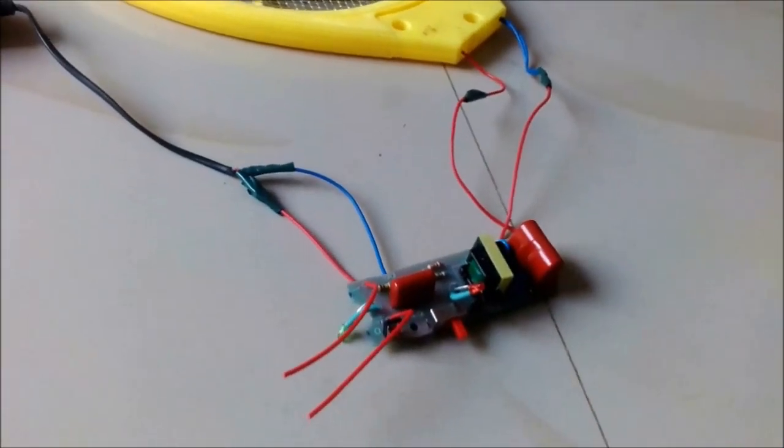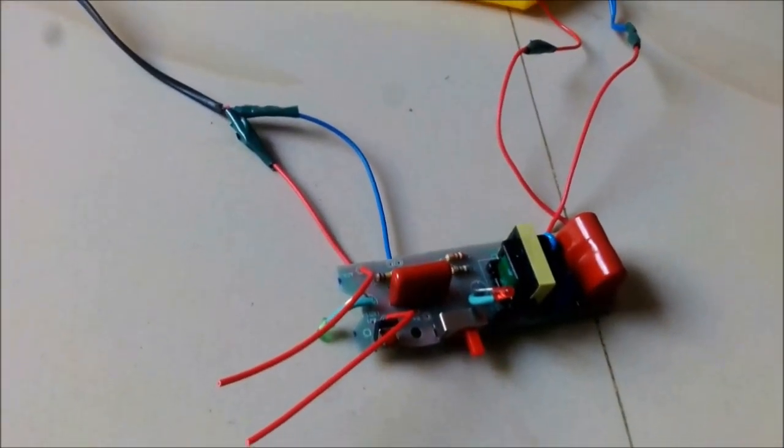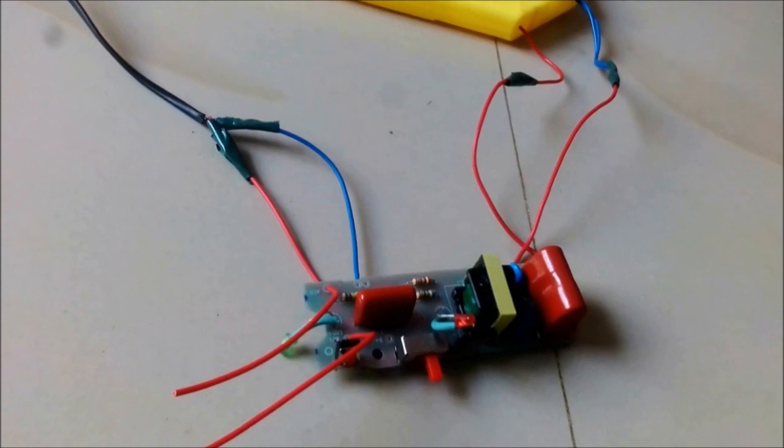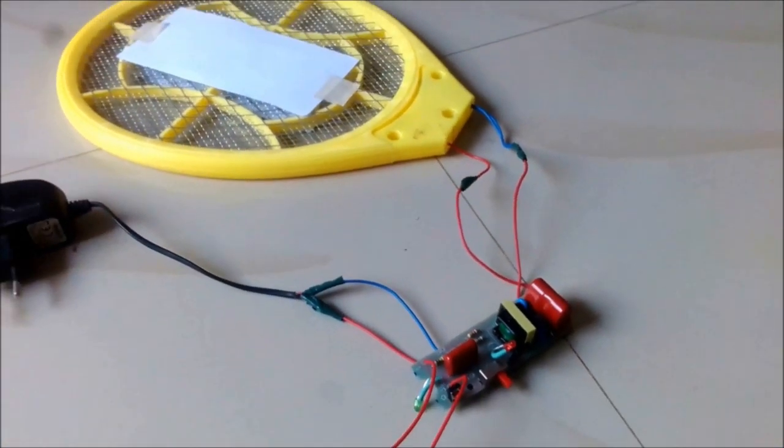Open the mosquito bat and remove the battery. In that place, connect a mobile charger of 5 volts capacity.